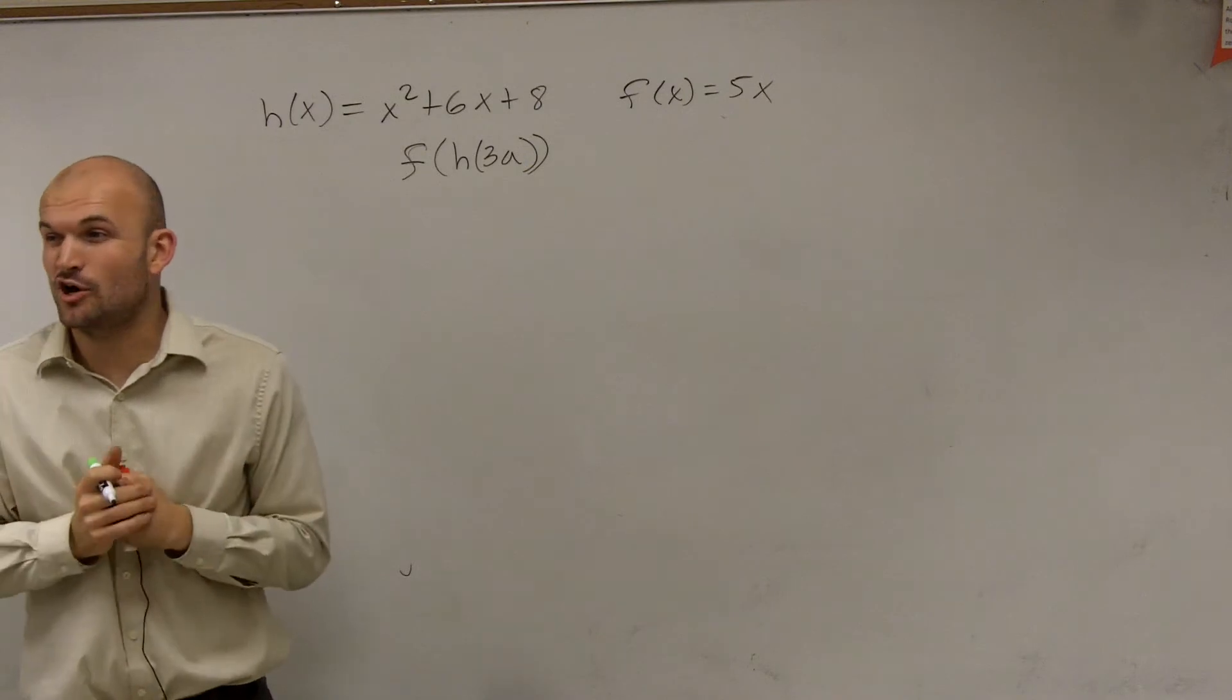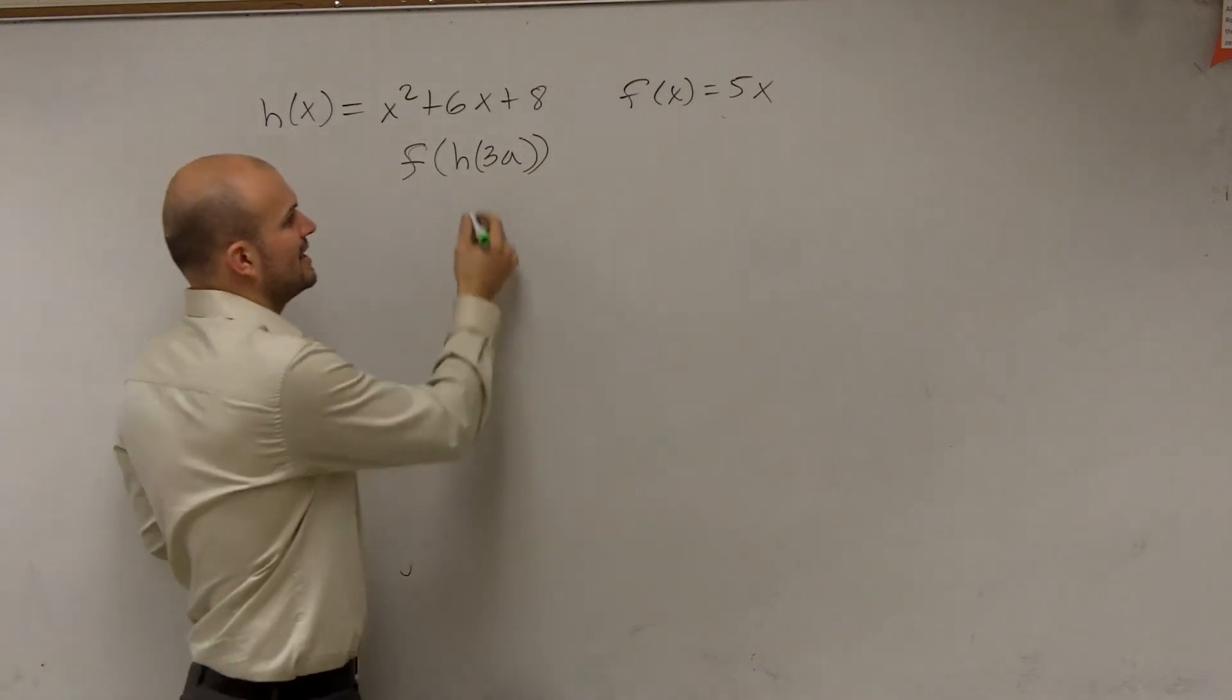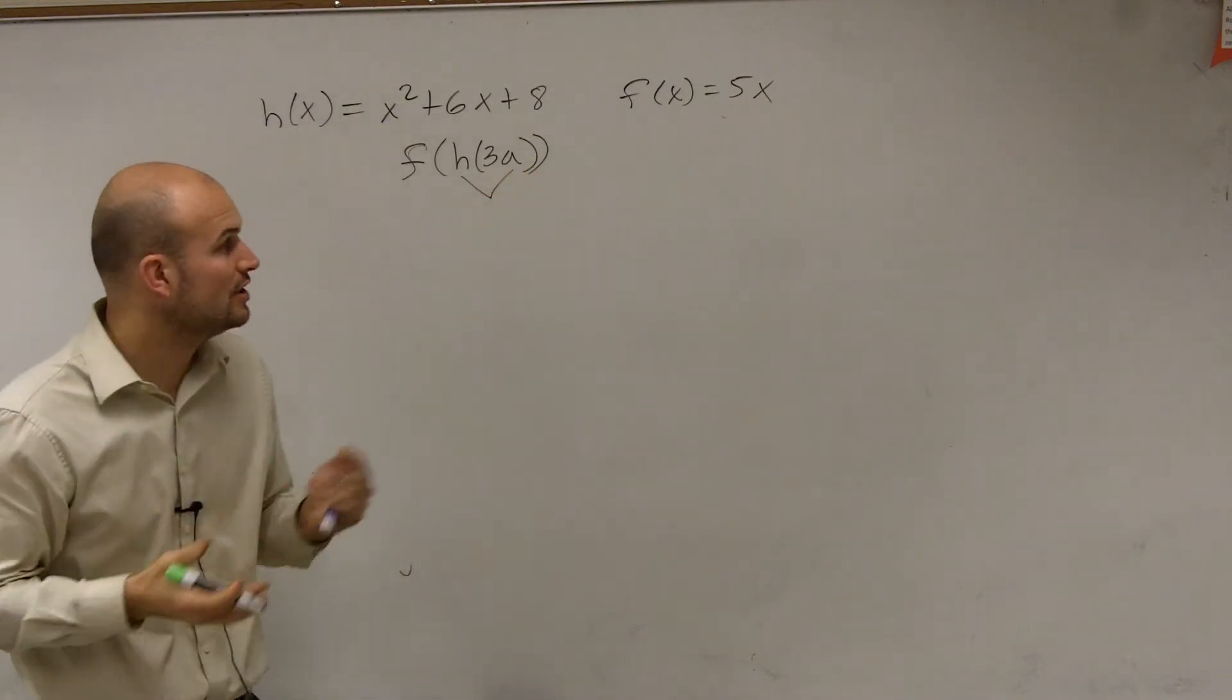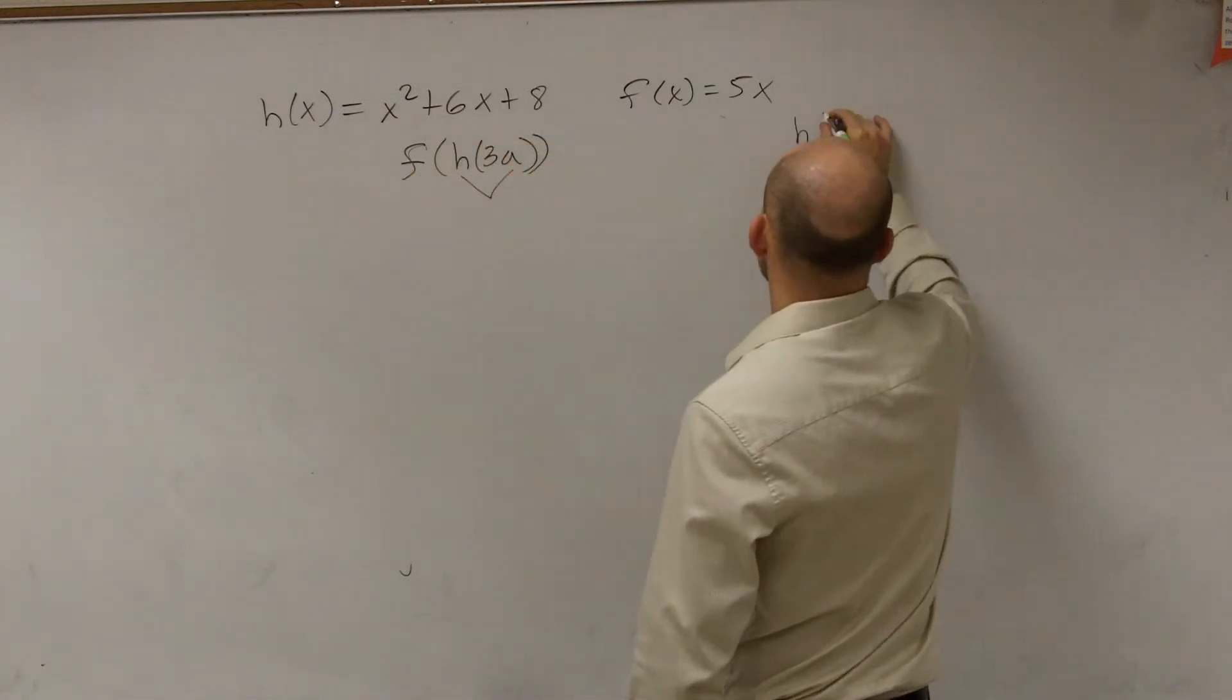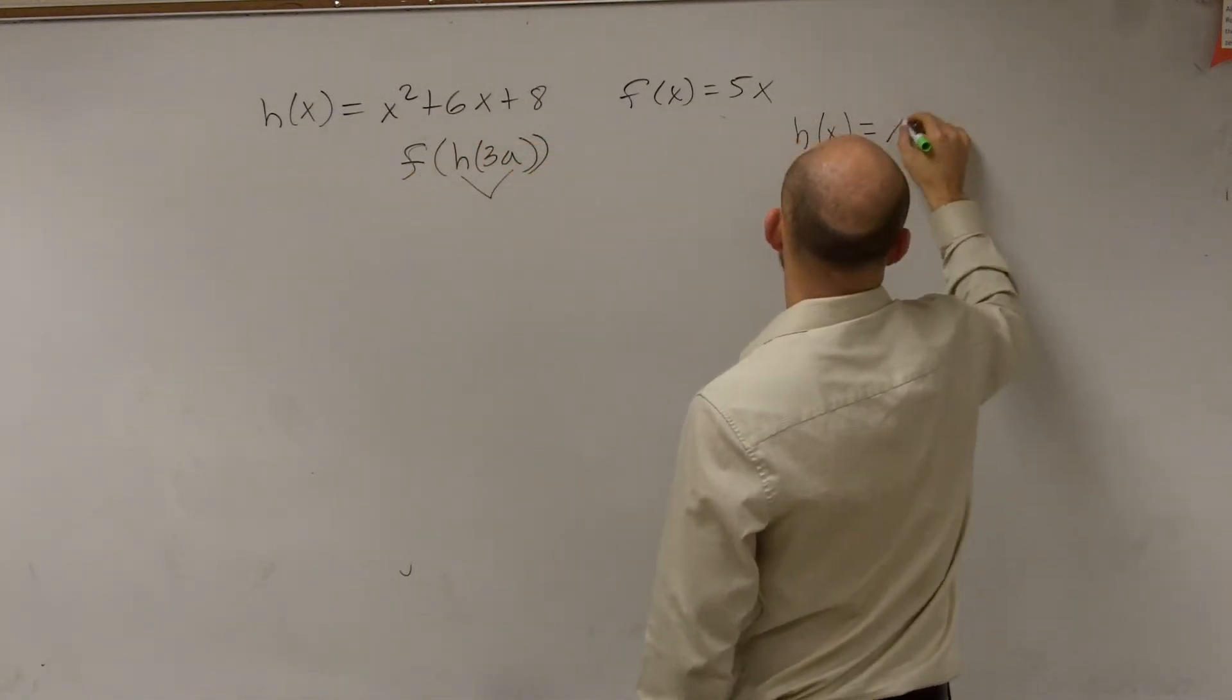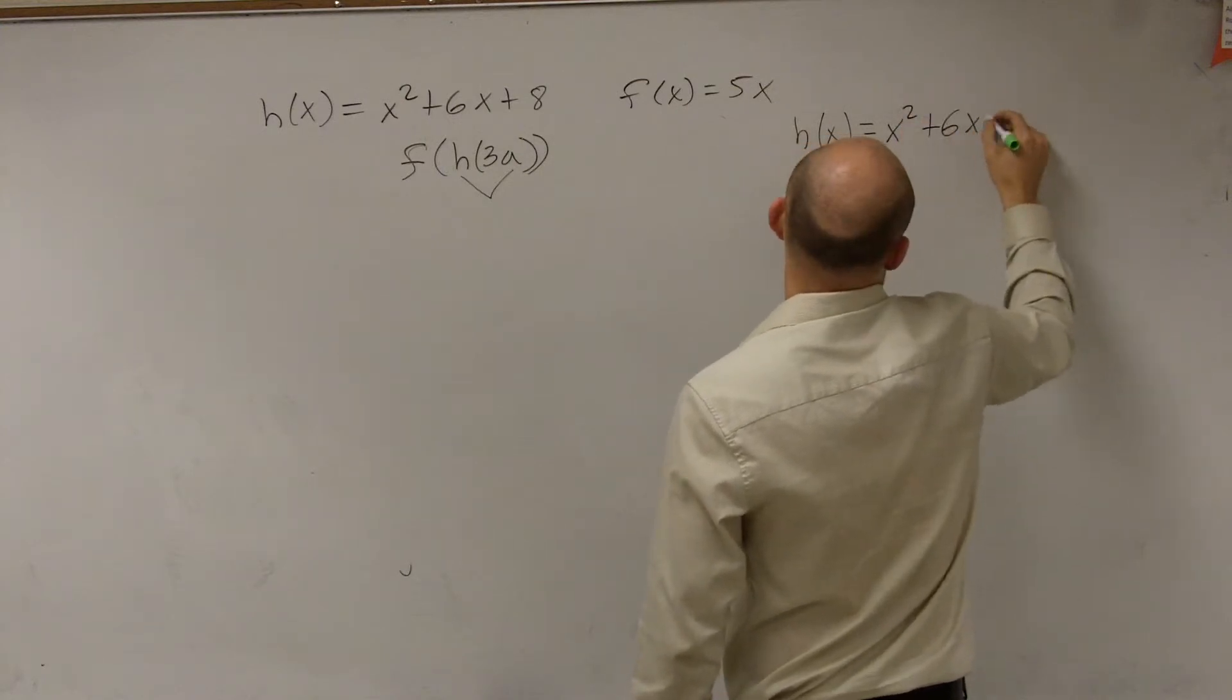So for this problem, again, let's go ahead and isolate it the first. Let's go and look at what we have on the interior. We have h of 3a. So if we have h of 3a, let's just write down what h of x is. h of x equals x squared plus 6x plus 8.